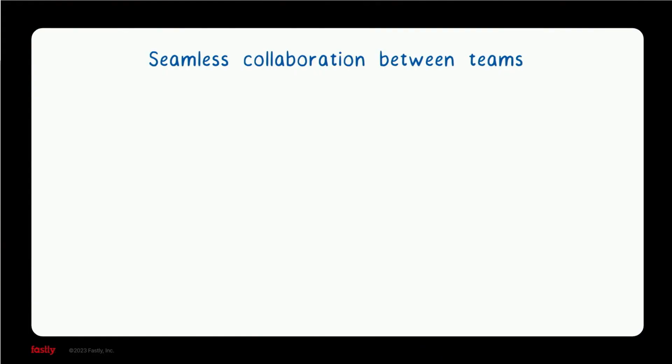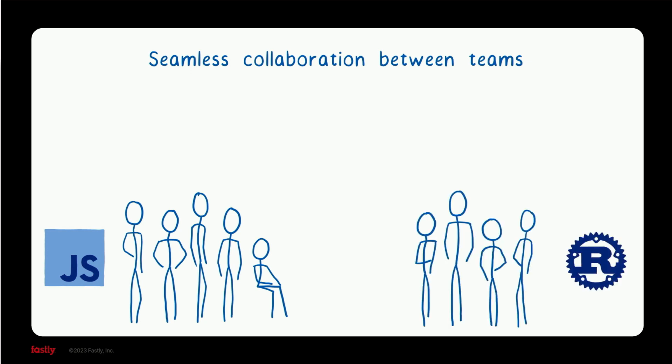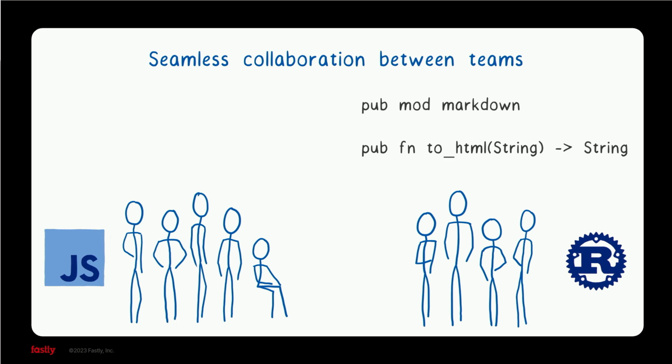And this is all in service of simplification — making it simpler and easier for you, our customers, to build applications. It looks like seamless collaboration across your development teams, no matter what languages they're working in. Do you have a team that works in JavaScript and another that works in Rust? With components, they can simply export functions to each other and import them, just as if they were working in the same language.